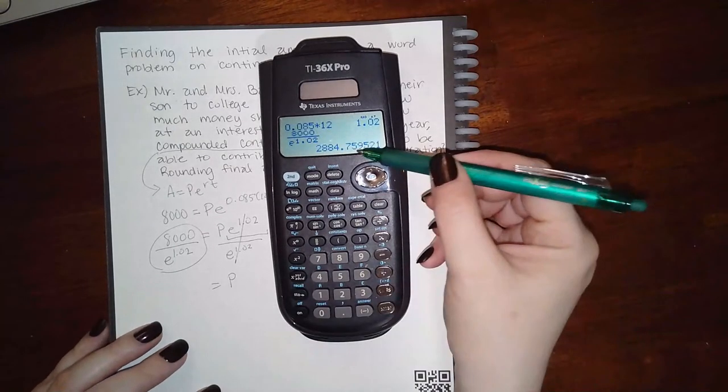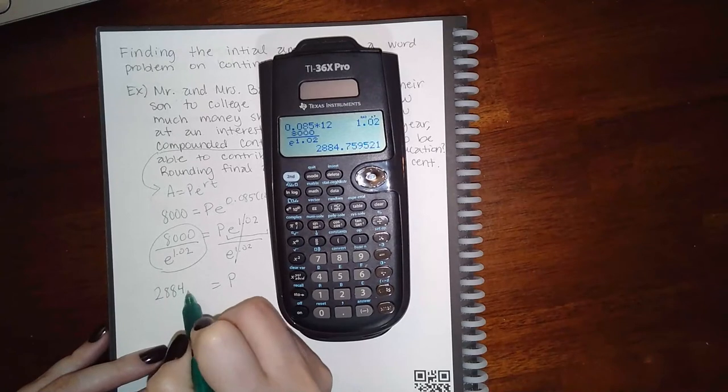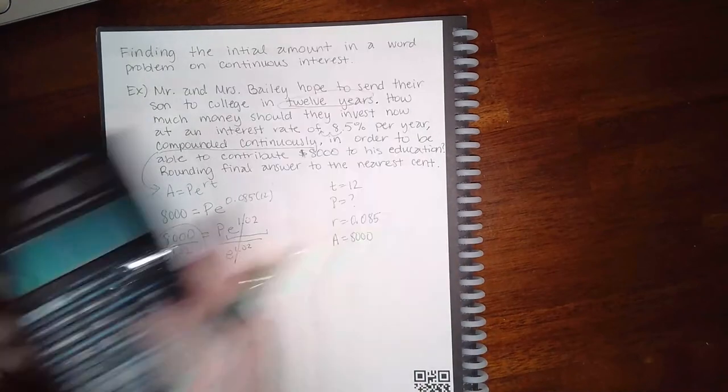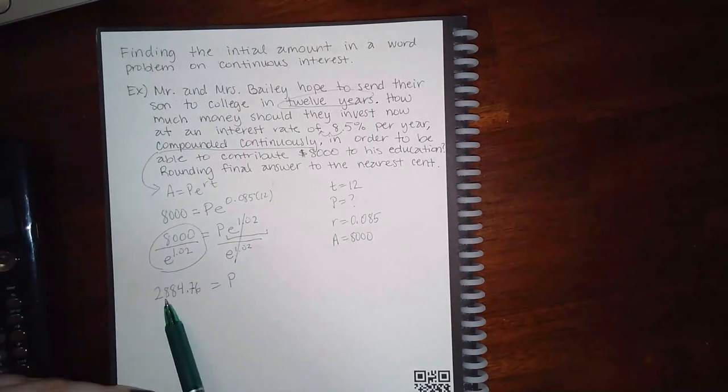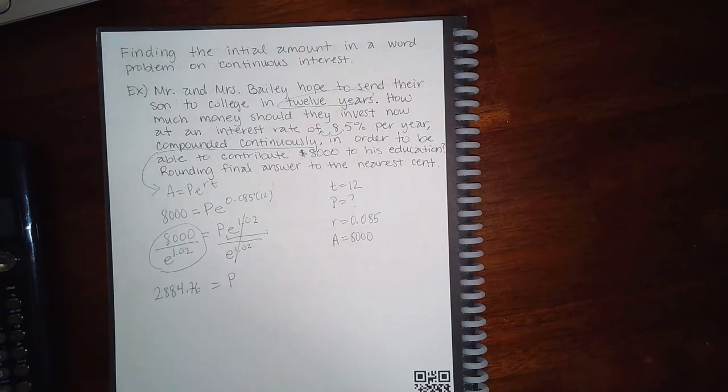And if I round that to the nearest cent, it's going to be $2,884.76. So if they invest $2,800 or about $2,900, actually, in 12 years they should be able to contribute $8,000.